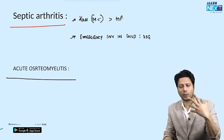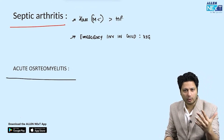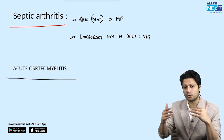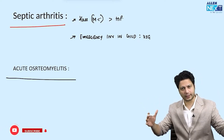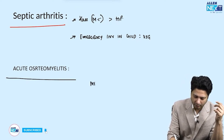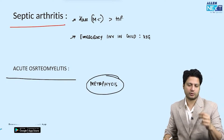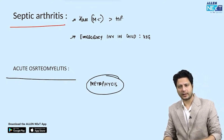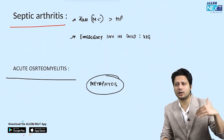For acute osteomyelitis, the key point to remember for your examination is metaphyseal involvement — the metaphysis is the most common site to be affected. Long clinical features related questions are also likely to be kept. The third question segment covers infective conditions, particularly chronic osteomyelitis.